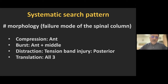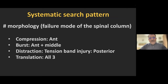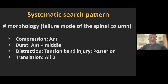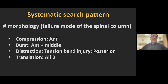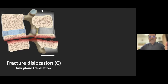Fracture morphology depends upon the failure mode of the spinal column. The four types are: compression fracture — primarily involving the anterior column; burst fracture — involving anterior plus middle column; distraction injury — a tension band injury involving the posterior tension band (most common) or rarely the anterior tension band (only in ankylosed spines); and translation injury — all three columns involved. By the end of this presentation, you will confidently determine fracture morphology into one of these four types based on CT appearance.